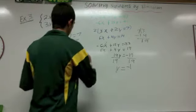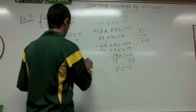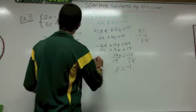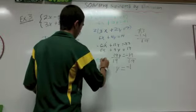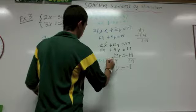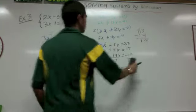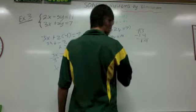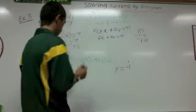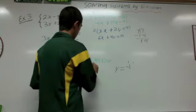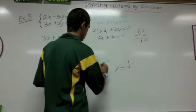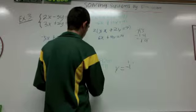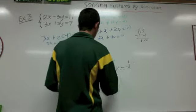It's going to be 2 times 3 minus 5 times negative 1 equals 11. So that's 6 plus 5 equals 11, and this does equal 11. So the first equation is correct.